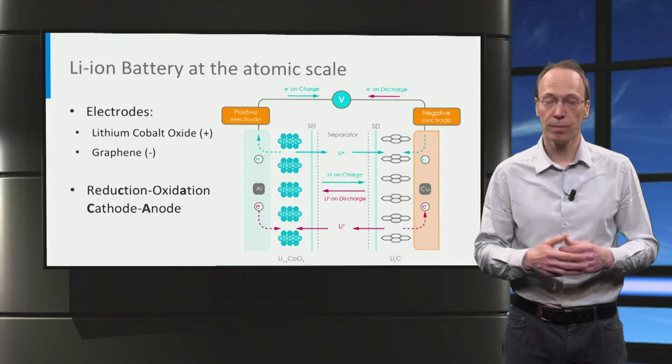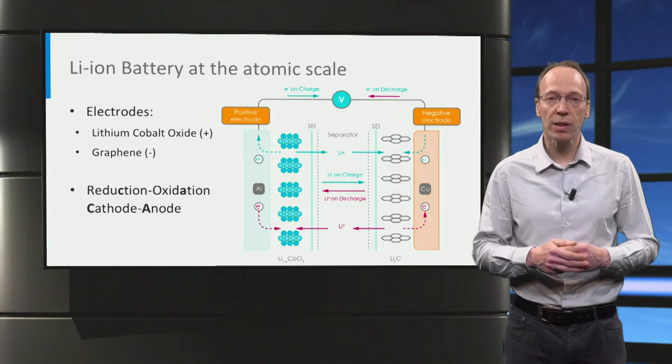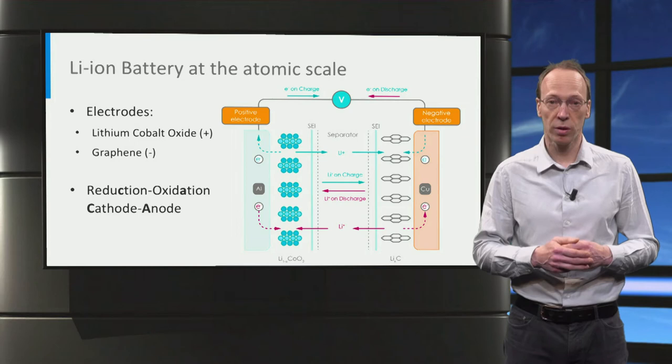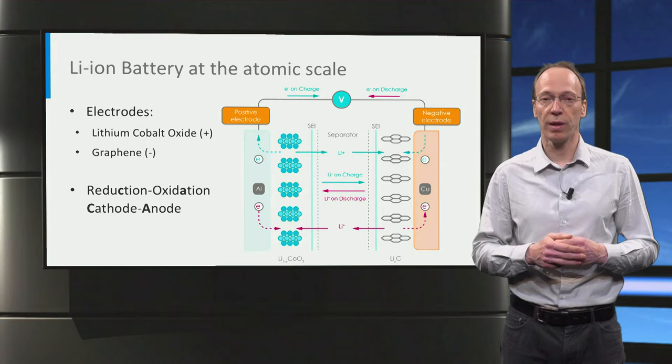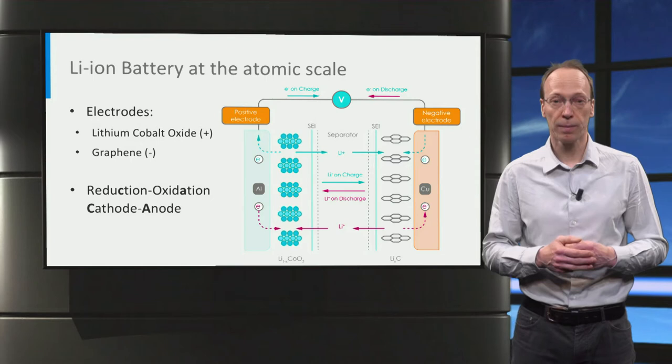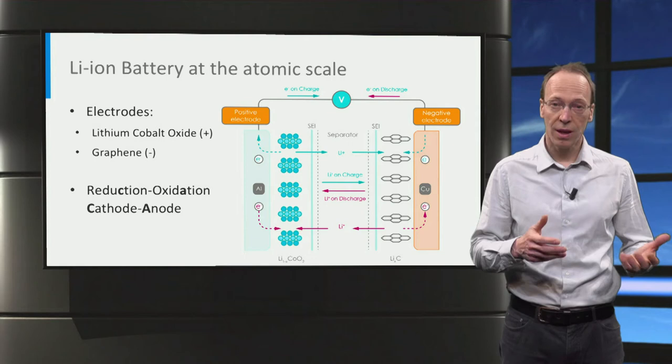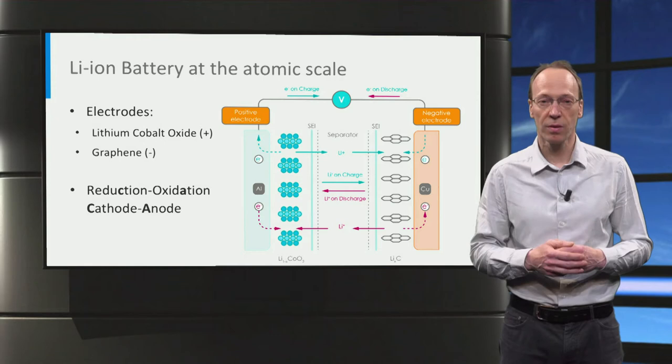Charging the battery is achieved by applying a current opposite to discharging, which requires a voltage larger than the battery open circuit voltage. This will drive the electrons back from the positive to the negative electrode via the external circuit, and thereby also the lithium ions are driven back. In this case, electron production and consumption are reversed, and thus also the anode-cathode assignment switches between discharge and charge, as opposed to the negative-positive electrode assignment that remains the same.